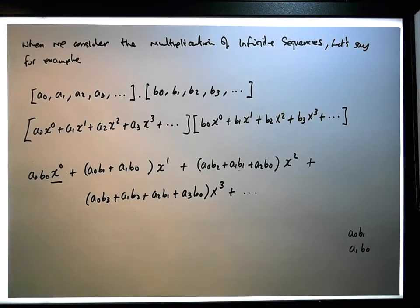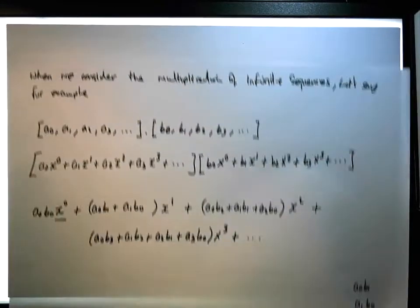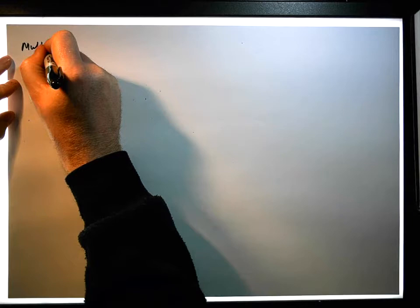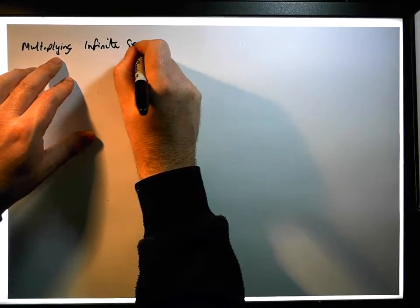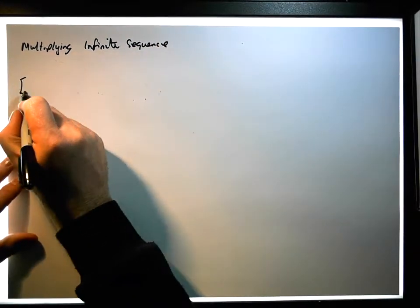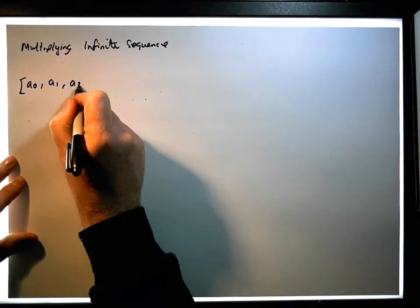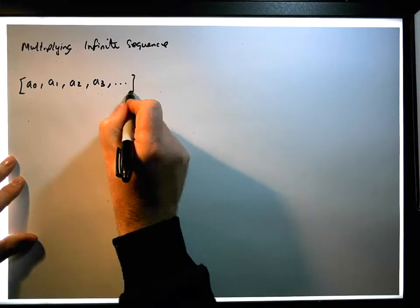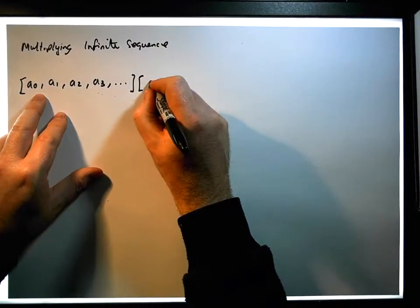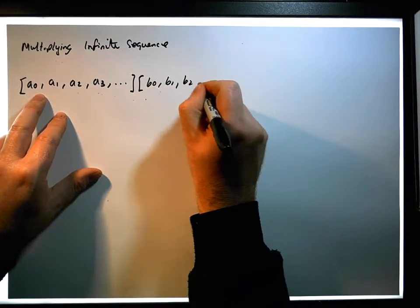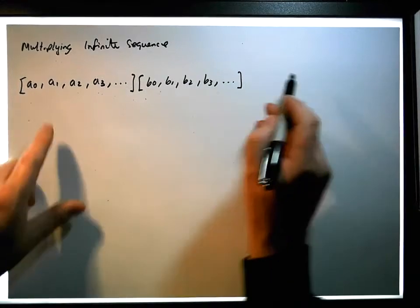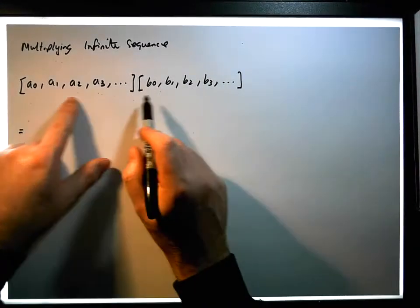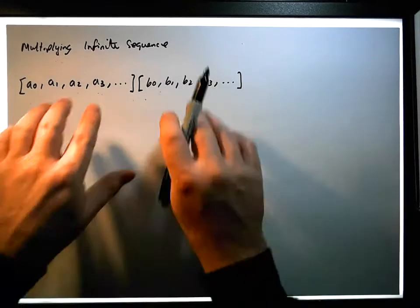So this leads us onto the observation that in multiplying infinite sequences — let's say we have a0, a1, a2, a3, ... times b0, b1, b2, b3, ... — we can figure out what the resulting sequence is. The resulting sequence is simply the coefficients of the power series after we multiply the power series out for each one of these.